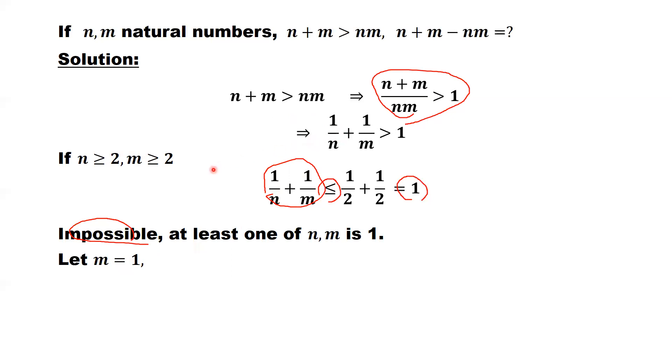So just assume m equals 1 because it's symmetrical. You can assume n equals 1, you will have the same result. Plug in here. We want to find this: n plus m minus n times m. Just plug in here, replace m by 1.